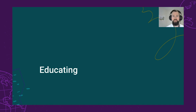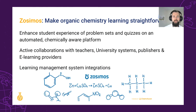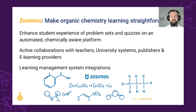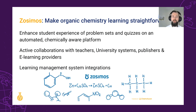Last but not least, ChemAxon continues to expand its efforts in the world of chemical education. Zozimos is ChemAxon's online learning application. We want to enhance the student experience of chemical problem sets and automate the grading process in a chemically aware platform. Zozimos has several active collaborations, scaling from individual instructors and university systems to publishers and e-learning providers. We're excited to develop integrations with learning management systems, having recently put into place an LTI 1.3 integration providing the basis of compatibility with platforms such as Canvas and Moodle.